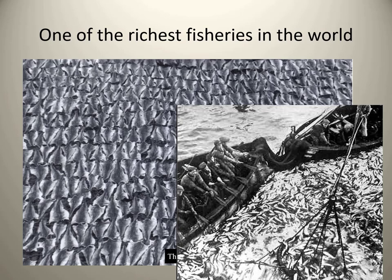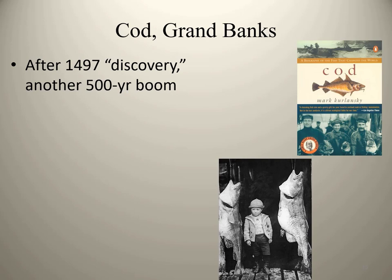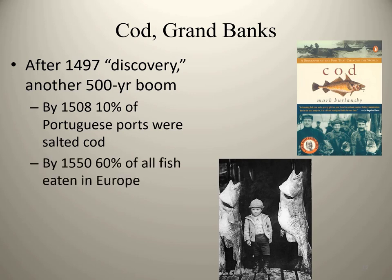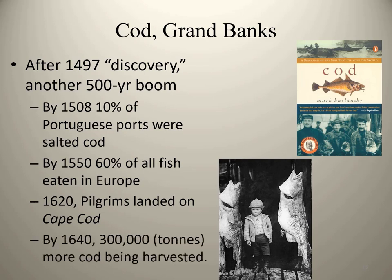Kurlansky writes: 'If there ever was a fish made to endure, it is the Atlantic cod, the common fish. But it has among its predators man, an open-mouthed species greedier than the cod.' After the 1497 discovery, there was another 500-year boom of cod fishing. By 1508, 10% of the stuff in Portuguese ports was salted cod. By 1550, 60% of all the fish eaten in Europe was cod. By 1620, the Pilgrims landed on Cape Cod, and by 1640, about 300,000 tons of cod was being harvested annually.